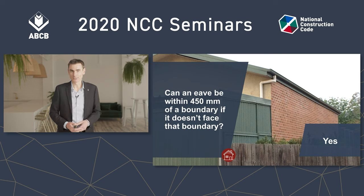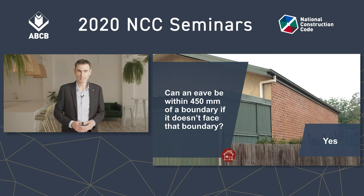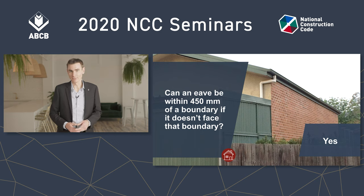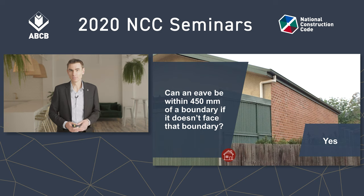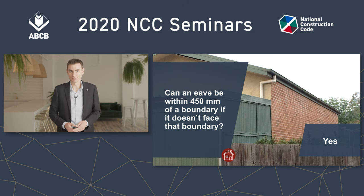But there is an allowable encroachments non-compliance shown in this photograph, besides the fact that the gutter and probably the fascia are hanging over the boundary. Can you see it? Yes, it's the combustible PVC downpipe. Clause 3727D1 requires that combustible downpipes that are encroachments be at least 450 millimetres back from the boundary.